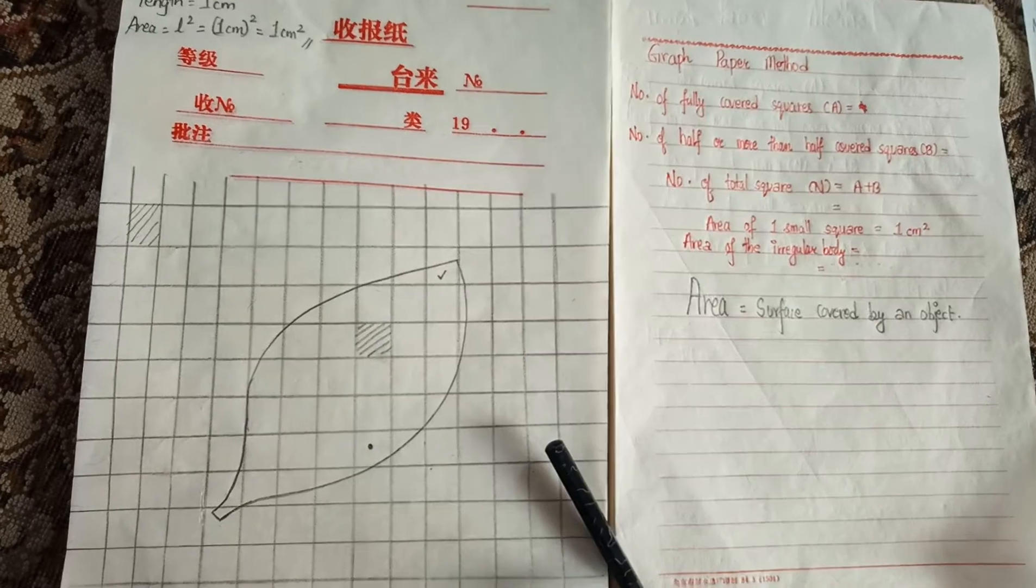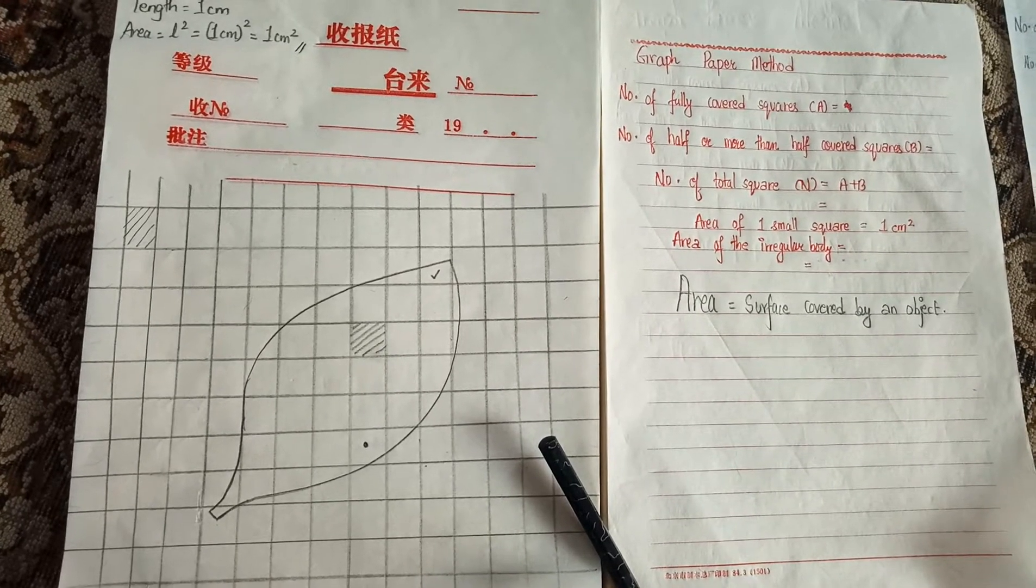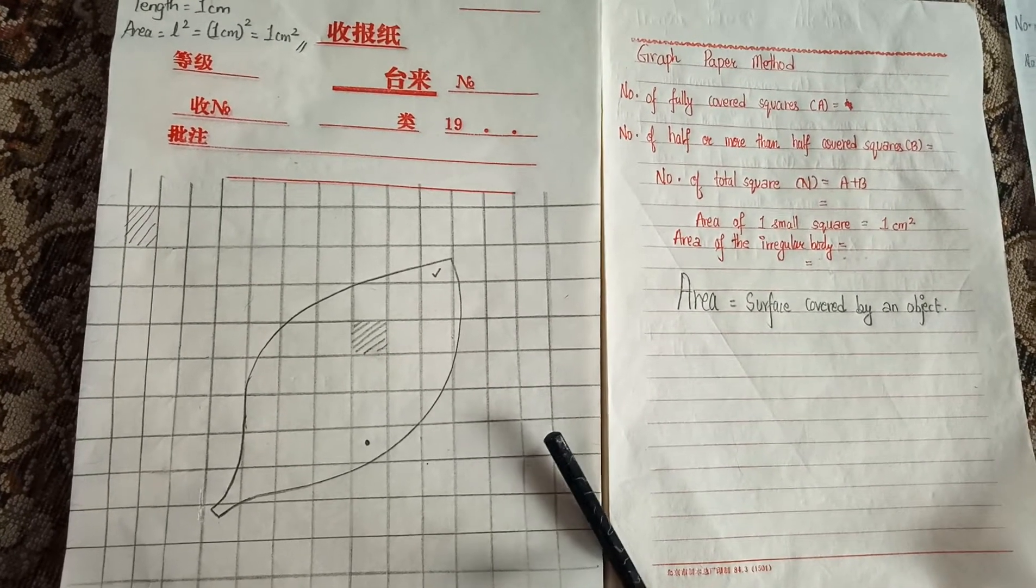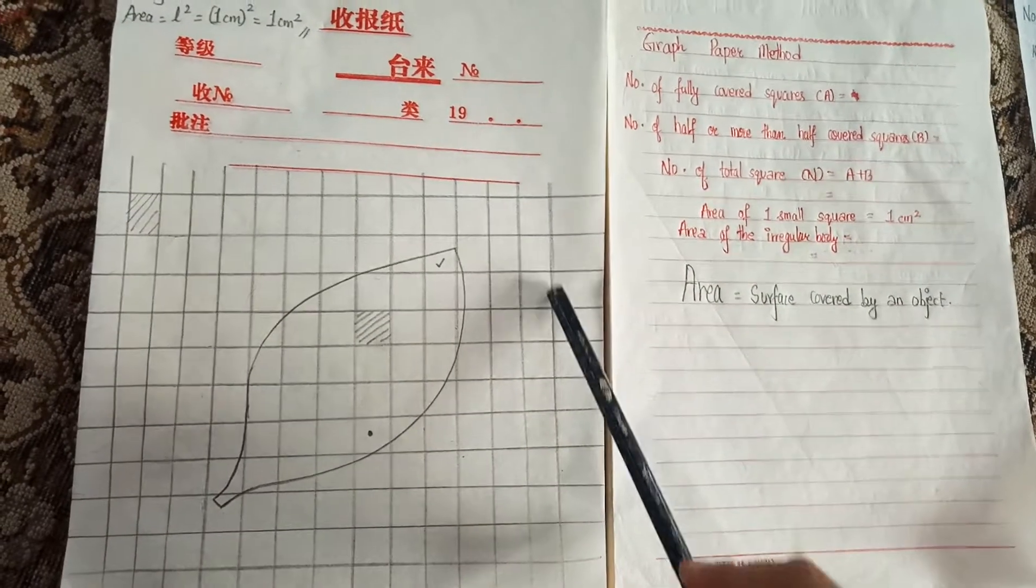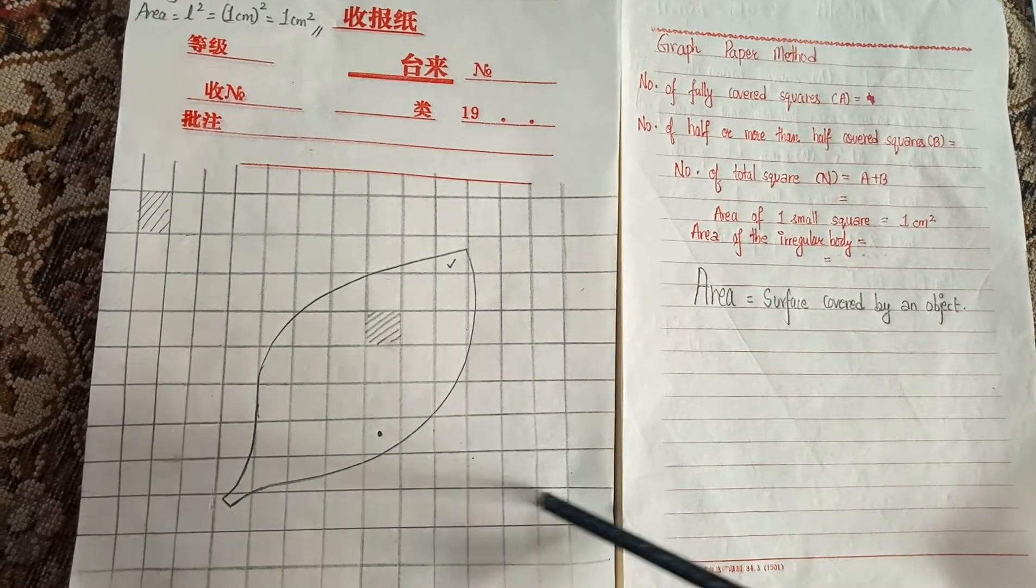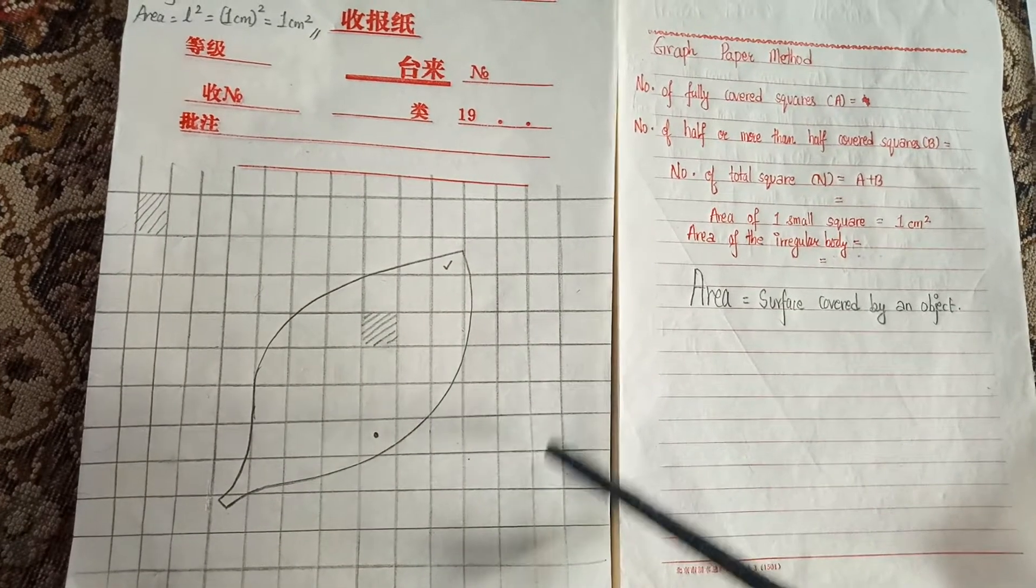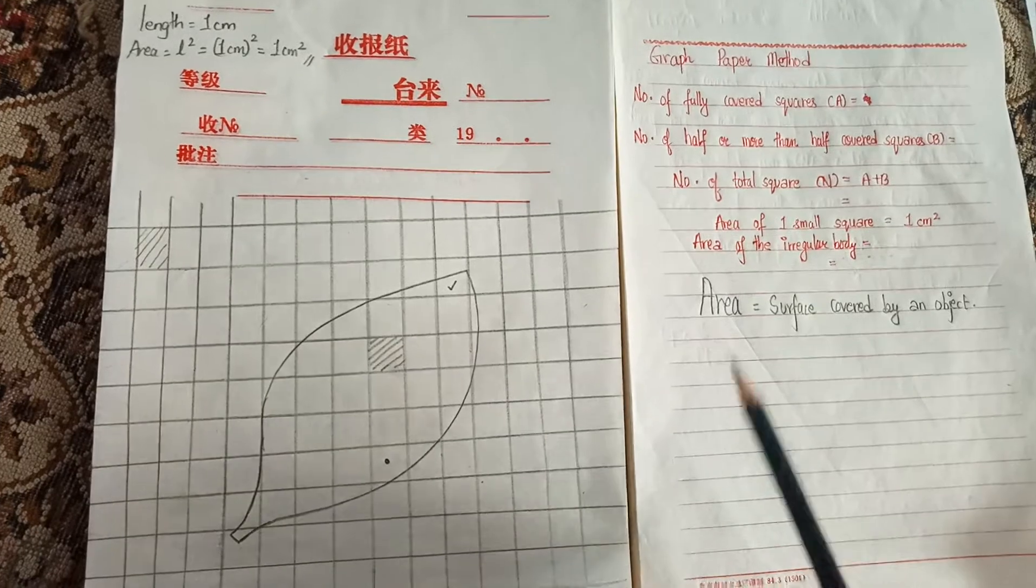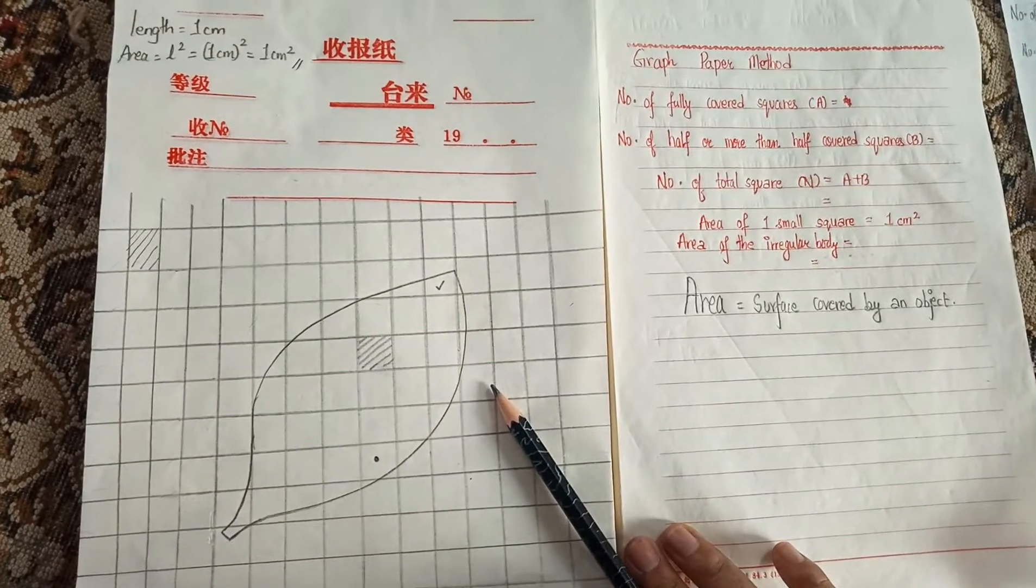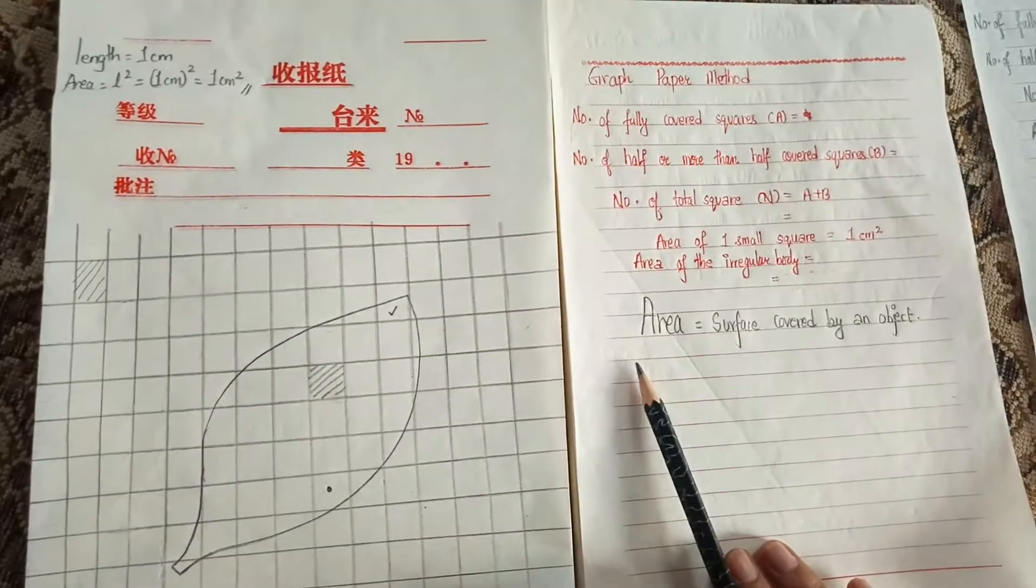We are all locked down in our homes and it is difficult to buy graph paper, so I've made my own and you can also make your own. The vertical and horizontal lines are apart from each other by one centimeter. Before I move into the procedure, let us be clear on our term: what is area?